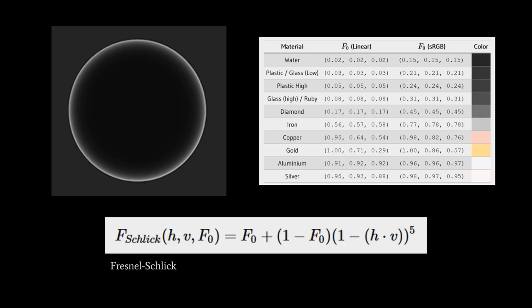Putting F sub zero aside, though, what do H and V do in this formula? Well, we get their dot product, such that when they point in the same direction, you'll get a value of one. And as they diverge, you get a value closer to zero. Well, we invert that by subtracting from one. And so this rightmost term here that's being raised to the power of five, the larger H and V diverge, the larger this value gets.